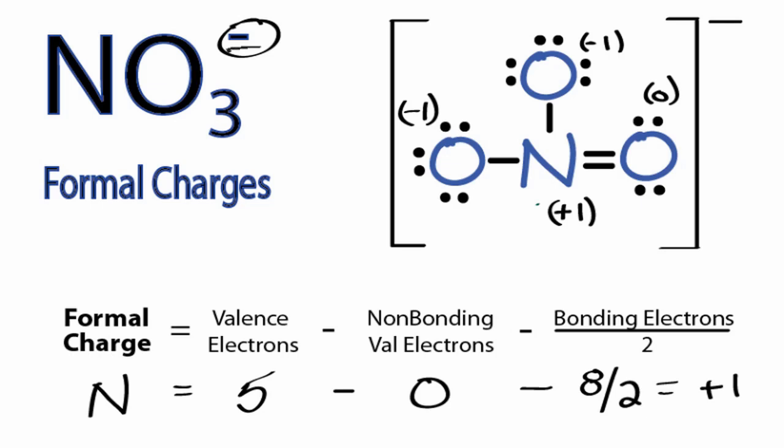And that makes sense because we have a negative up here. It also makes sense that the formal charges that are negative are on oxygen, which is more electronegative, and that the nitrogen has a plus 1 formal charge since it's less electronegative than the oxygens. Those are the formal charges for NO3 minus.